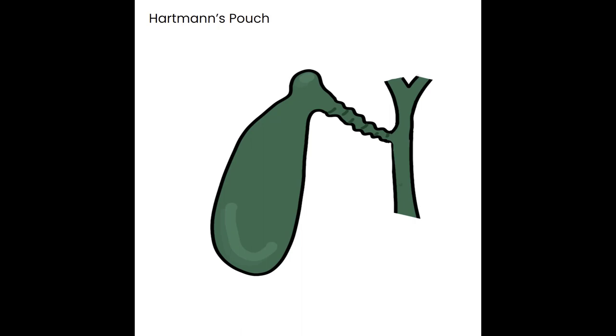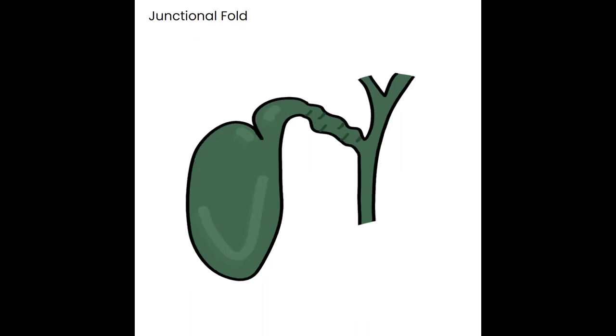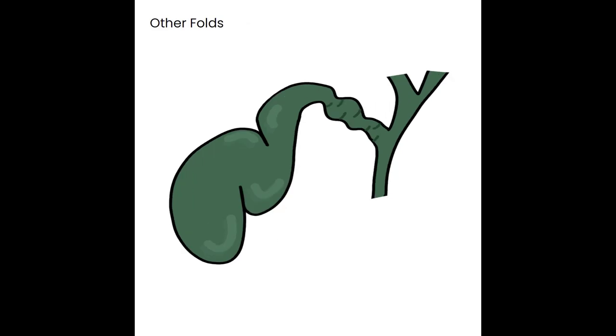Hartmann's pouch is found at the neck of the gallbladder — normally a thin funnel toward the cystic duct — but with Hartmann's pouch there's a small pocket off the neck where stones can get caught. It is also known as an infundibulum. The Phrygian cap is a fold at the fundus that puts the fundus back onto itself — also a common spot for stones to get stuck. A junctional fold is found between the neck and the body, causing the gallbladder to fold over on itself, changing its appearance without being pathologically significant.